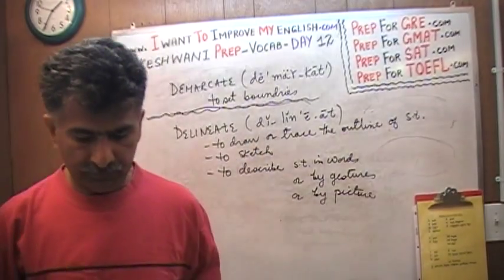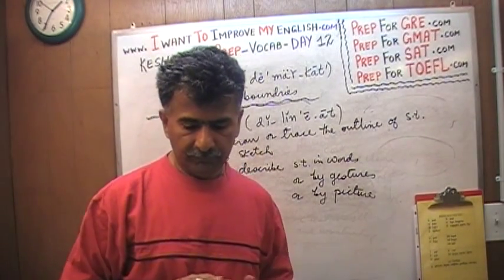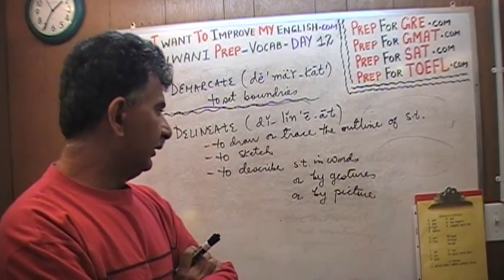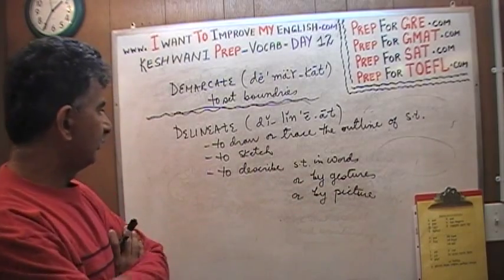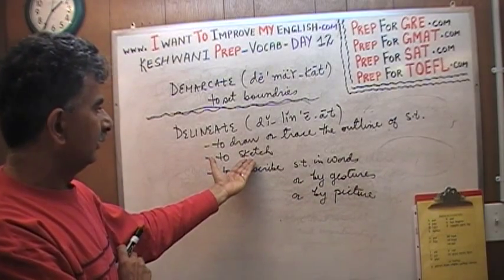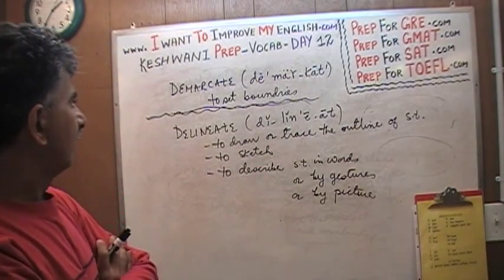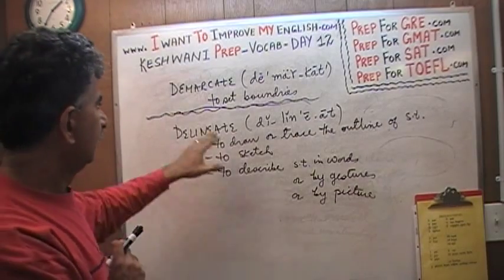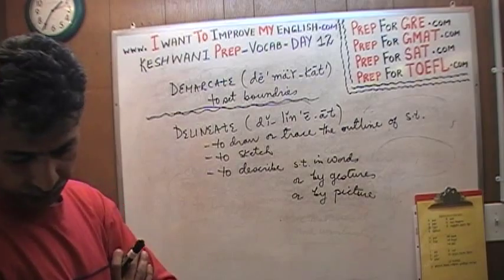To delineate an event, to delineate a story, means to describe it either in words, in gestures, or through pictures — or to sketch something, to draw something, to trace an outline of something. This has nothing to do with demarcation; demarcation simply means to put a boundary around something.